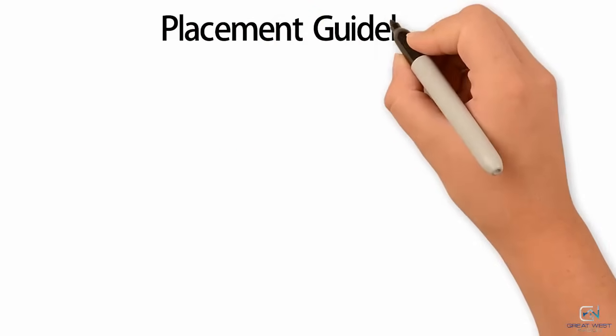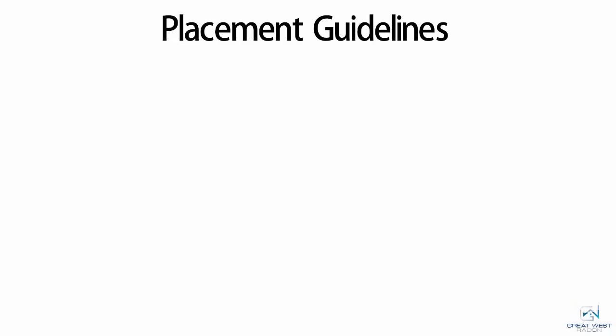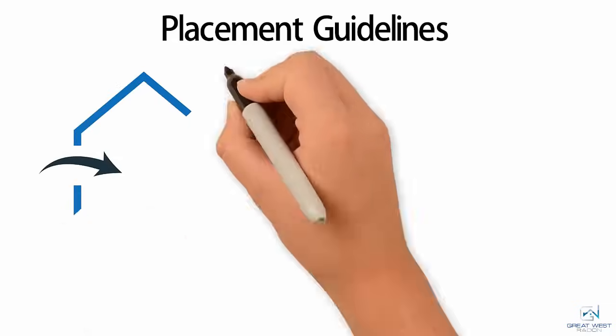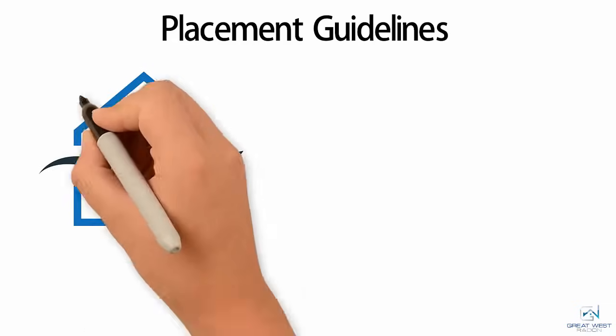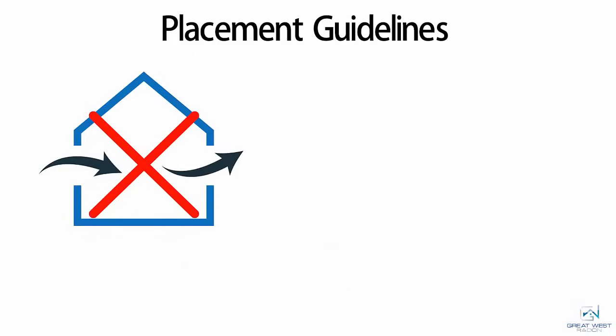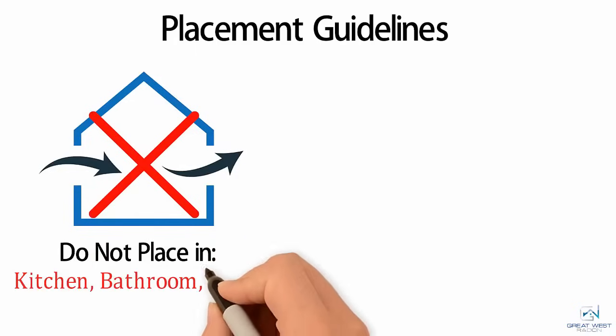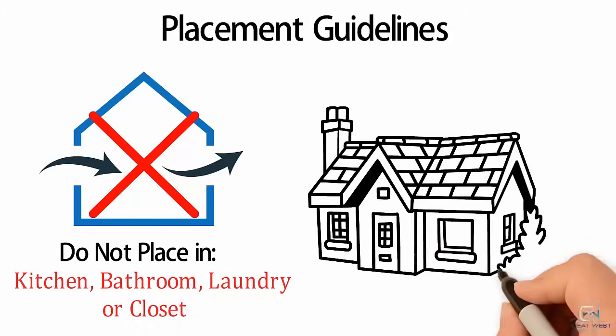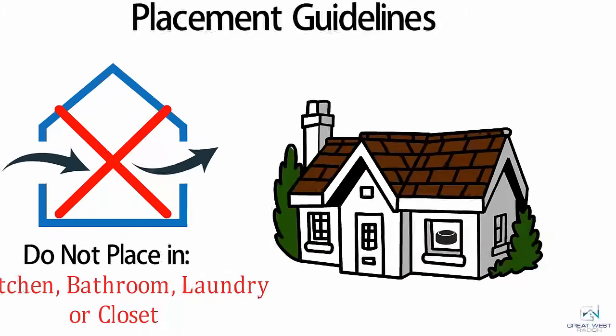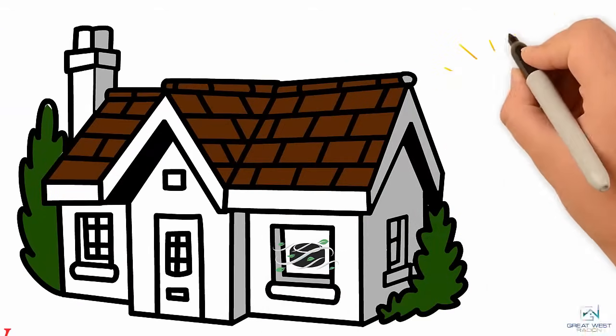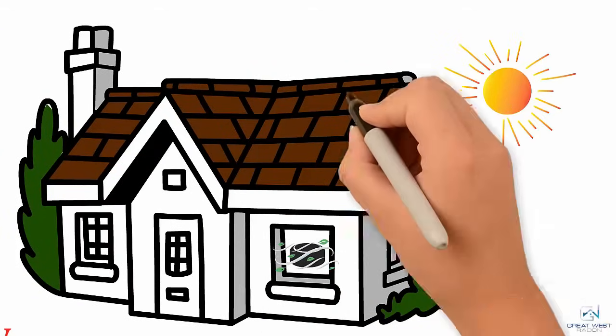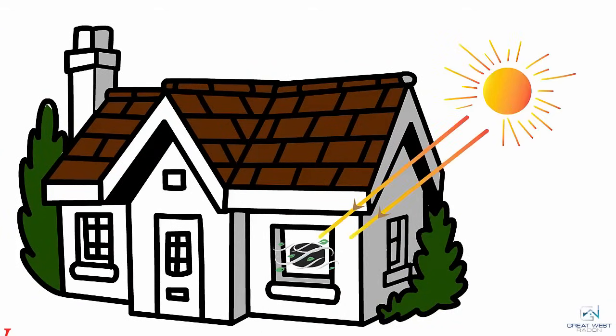Next is the Placement Guidelines. Health Canada recommends not placing the testing device in any highly ventilated areas such as the kitchen, bathroom, laundry, or areas that are completely unoccupied such as a closet. These test devices should be placed away from drafty areas of your home, out of direct sunlight, and should avoid areas of high humidity.